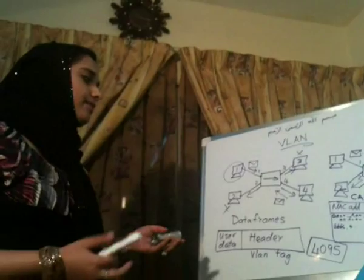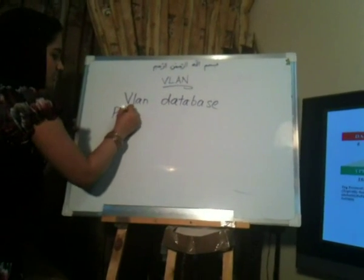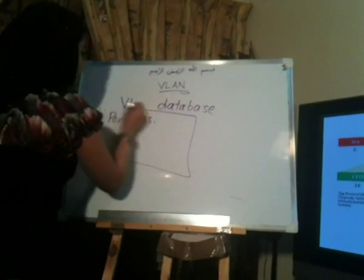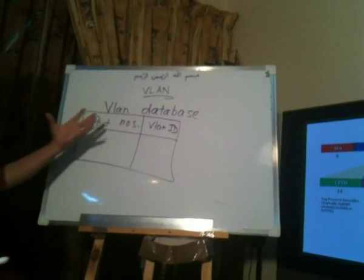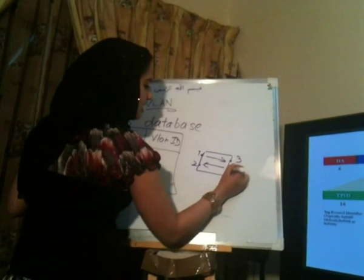So that's the VLAN tag. When the switch receives a data frame, it checks the VLAN tag to understand which VLAN the port belongs to. The switch assigns ports to different VLANs and builds another special table called the VLAN database. The VLAN database stores port numbers along with their corresponding VLAN IDs. For example, on a switch with ports 1, 2, 3, and 4, each port is mapped to a specific VLAN ID, so the switch knows which VLAN each port belongs to.